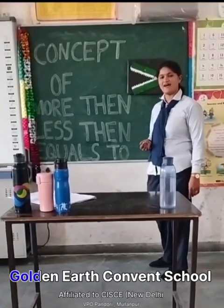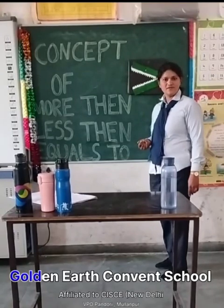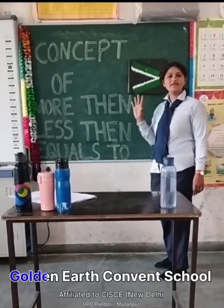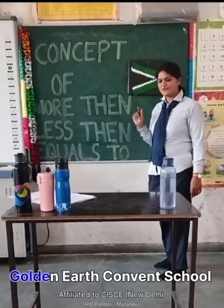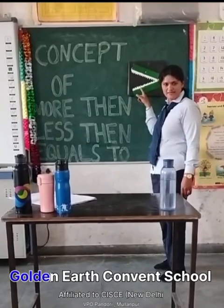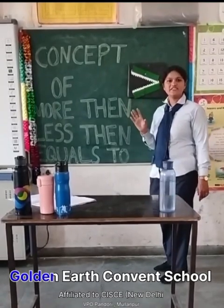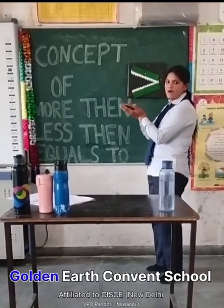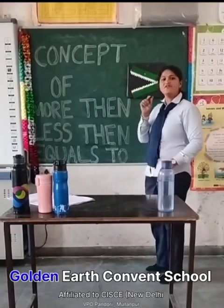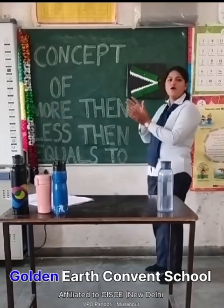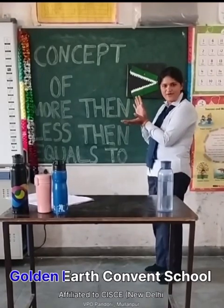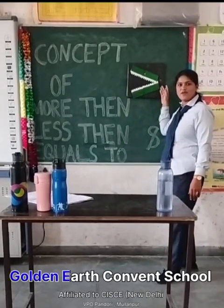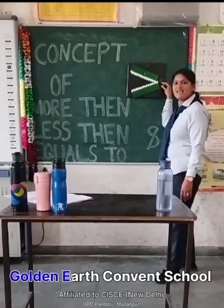Now let's start. Here is the rule: this crocodile opens his mouth to eat the big number. Where you see the big number, the crocodile's mouth opens toward it. And on the back side of his mouth is the less than sign — that is the sign of less than.